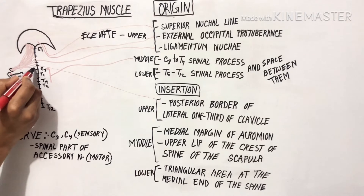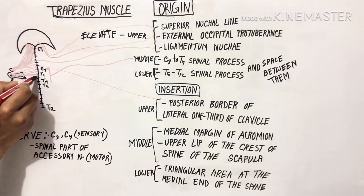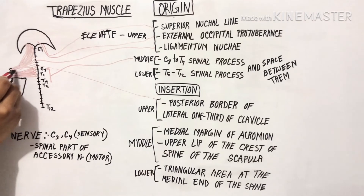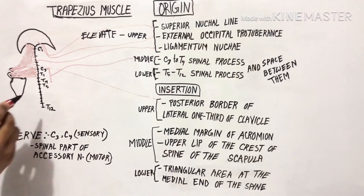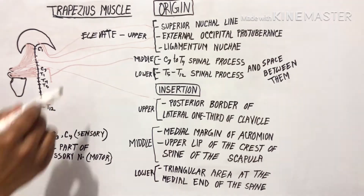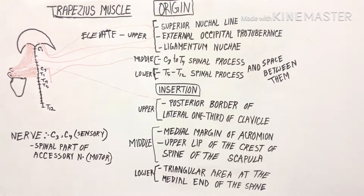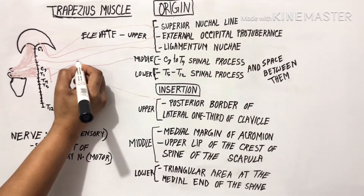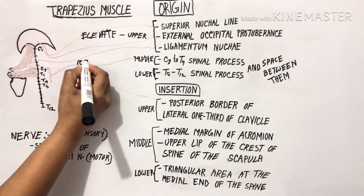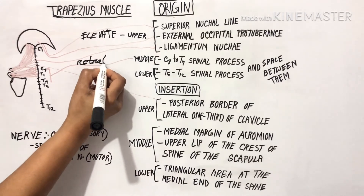The middle fibers are also called transverse fibers. These fibers act with rhomboid major and rhomboid minor to retract the scapula.